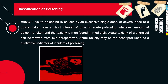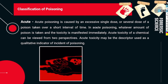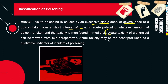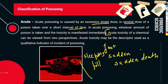Now let's discuss the classification of poisoning: acute, subacute, chronic, fulminating, accidental, and judicial. Acute poisoning is caused by an excessive single dose or several doses taken over a short interval of time. The toxicity is manifested immediately — the effect is fast and sudden. Sudden death is seen in acute poisoning. For example, taking a large number of sleeping pills in one go causes death.